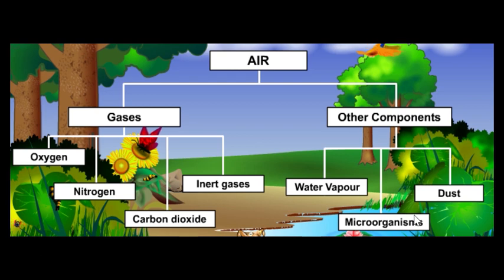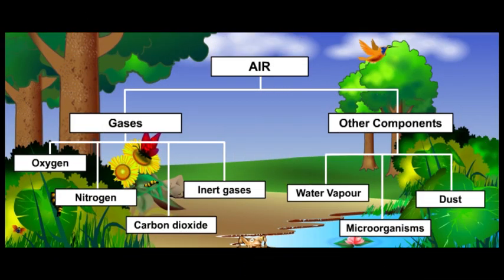There are also suspended microorganisms in the air such as viruses and bacteria. Some of these microorganisms can cause infectious diseases such as cough and flu. Let's make a summary on what you have learned. Air consists of gases and other components. The gases include oxygen, nitrogen, carbon dioxide, and inert gases. Other components are water vapor, microorganisms, and dust.